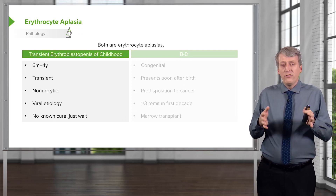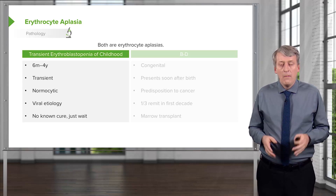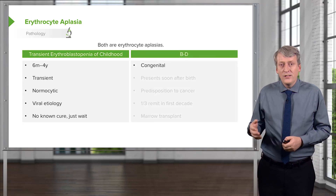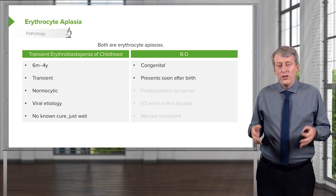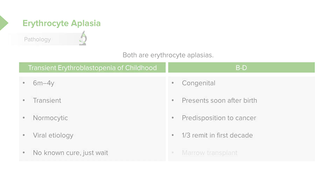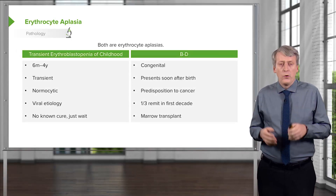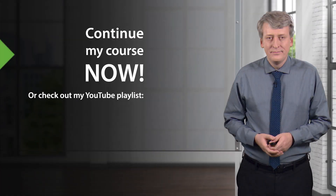The flip side is congenital erythrocyte aplasia, or Diamond-Blackfan anemia, where a child never develops red blood cells in the first place. They start with red cells from fetal hemoglobin but are then incapable of making any further. It presents soon after birth with rapid onset anemia, and there is a predisposition to cancer in these patients. One-third of cases remit in the first decade, but many patients, after multiple transfusions, go on to bone marrow transplant — which is the only cure for persistent disease.